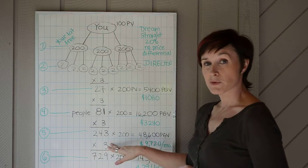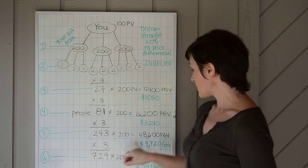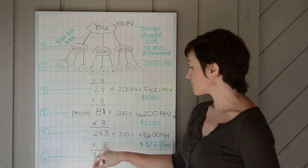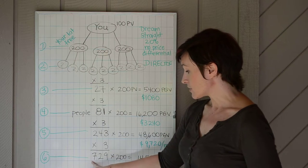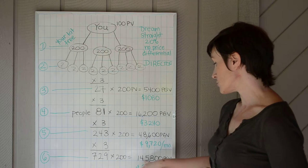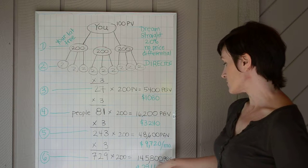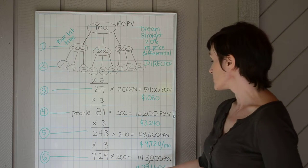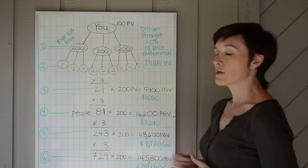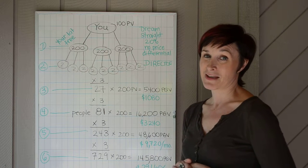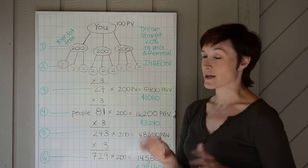For those of you who are really motivated by money, I think that, first of all, the $10,000 would do it. But if not, take it down another level, and you're down to 145,800 PGV, which would be equivalent to making $30,000 a month. And I don't know many of you who wouldn't get excited about that.